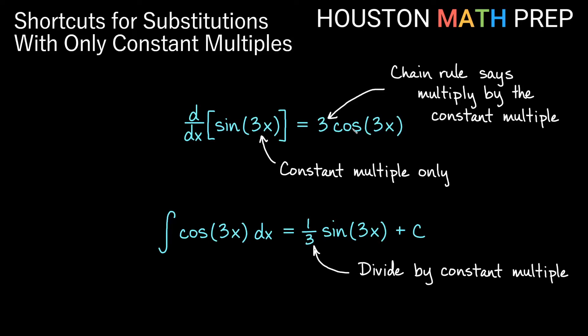In other words, the only thing supplied by the chain rule here is times 3, and the opposite of times 3 is divide by 3 here. So we actually get one-third sine of 3x plus c.